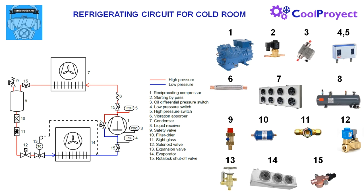In number 6 we have the vibration absorber, normally placed in the discharge line to reduce noise and vibration generated by the compressor. With this device we have less probability of broken connections and refrigerant leaks.